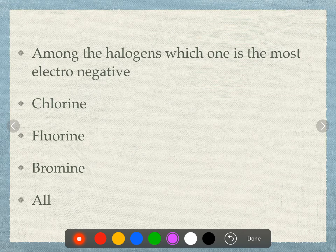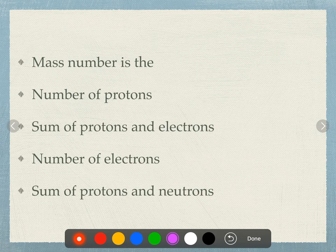Among the halogens, which one is the most electronegative? Options: chlorine, fluorine, bromine, or all. Fluorine is the most electronegative.